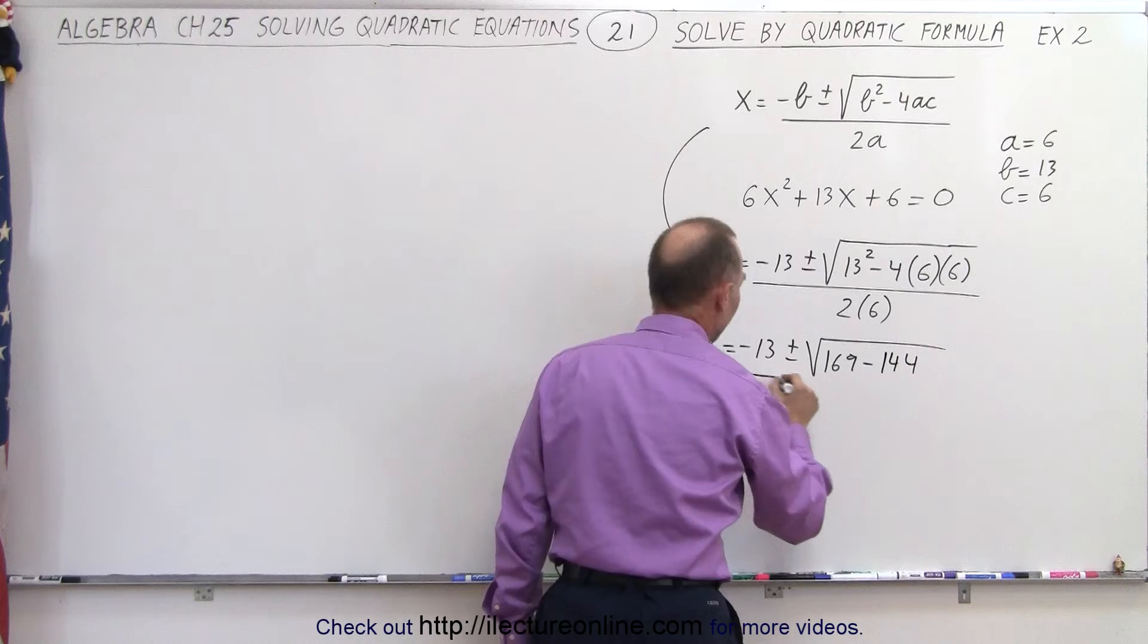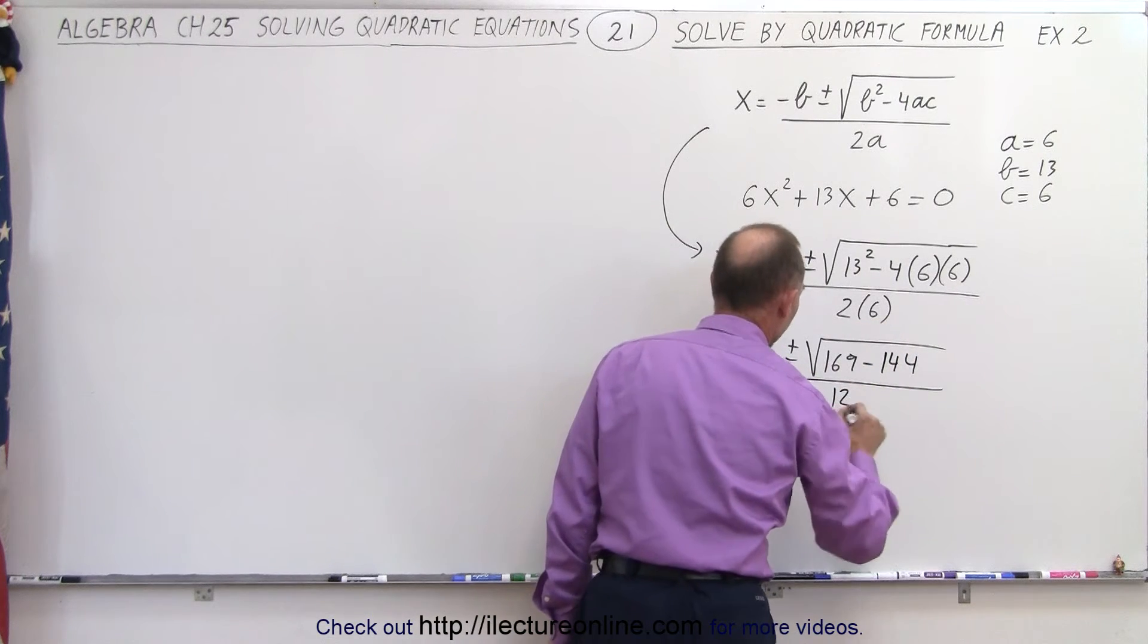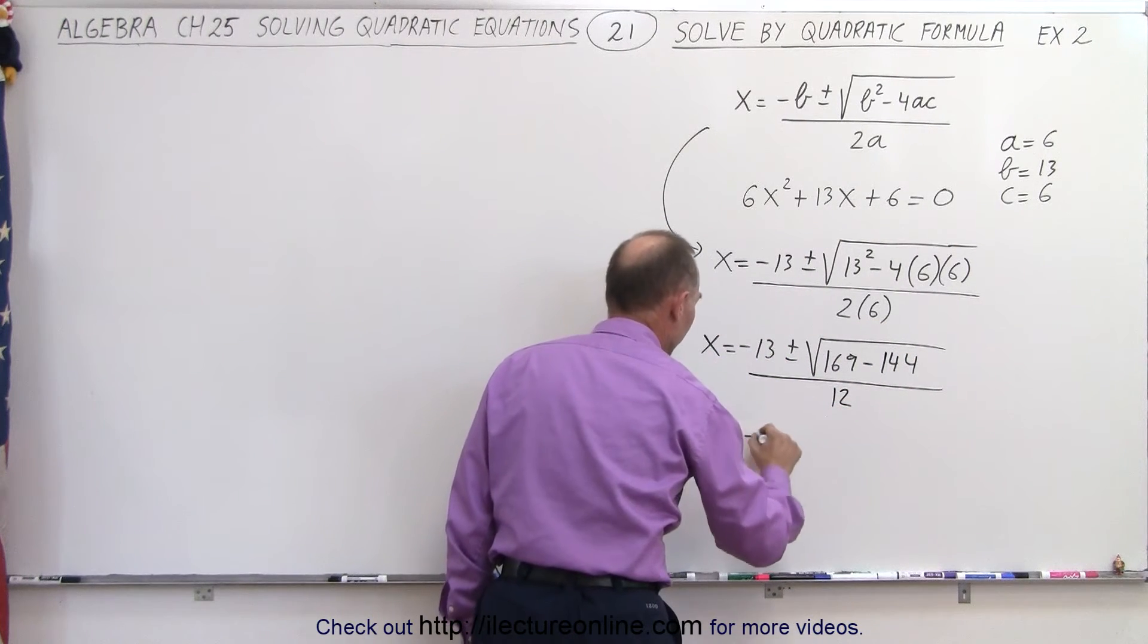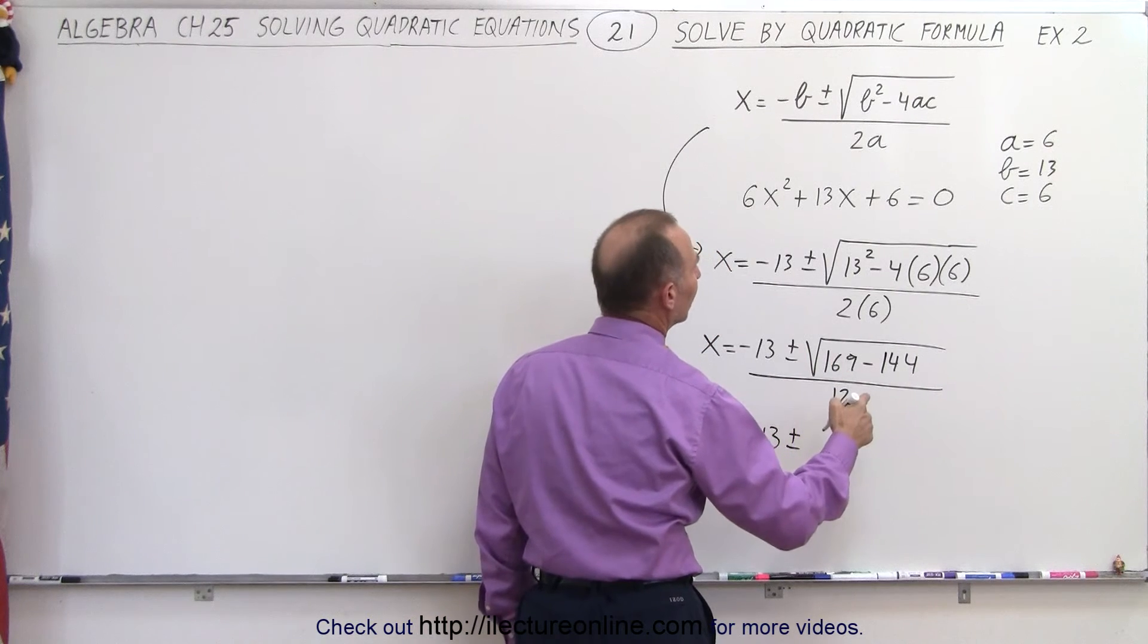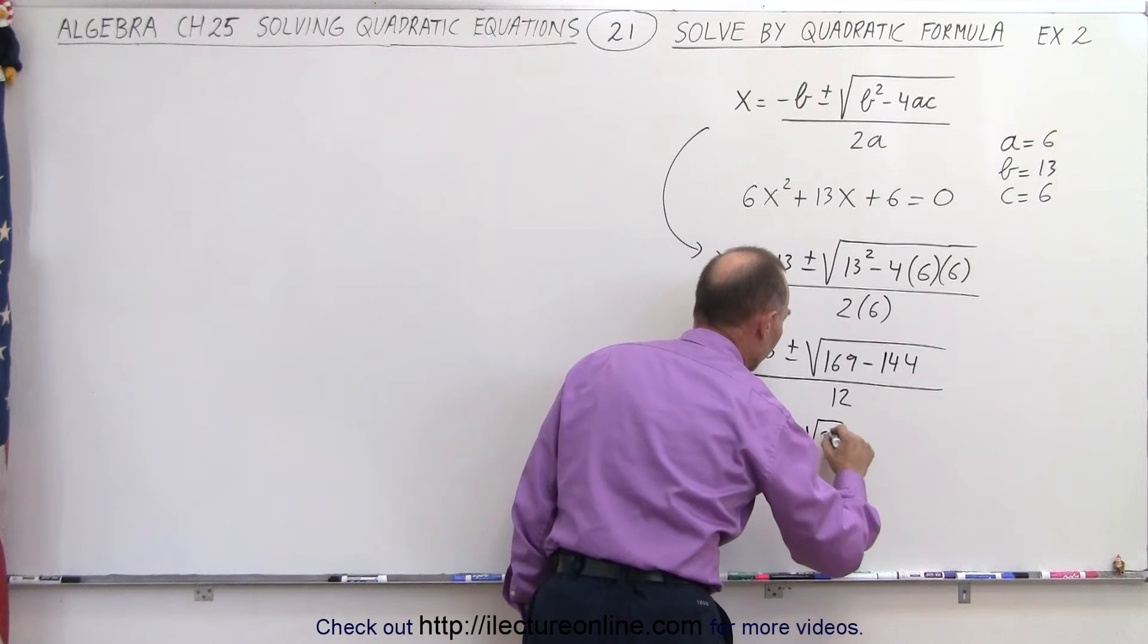So simplifying that more, we get x is equal to minus 13 plus and minus, 169 minus 144 is the square root of 25, divided by 12.